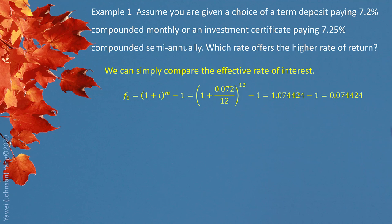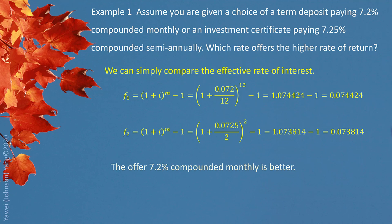For 7.2% compounded monthly, we find the corresponding effective interest rate F1 = 0.074424. For 7.25% compounded semiannually, we find the corresponding effective interest rate F2 = 0.073814. We can clearly see the difference: F1 is bigger than F2. F1 is equivalent to 7.2% compounded monthly, F2 is equivalent to 7.25% compounded semiannually, so 7.2% compounded monthly is better.